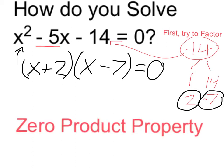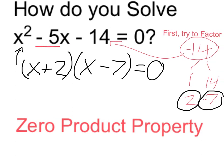Now we can use our zero product property, which tells us that if the whole thing is equal to 0, then either part must be equal to 0.